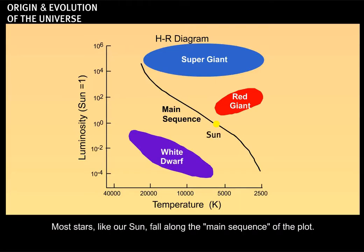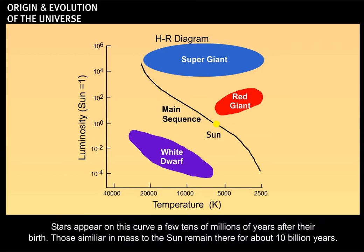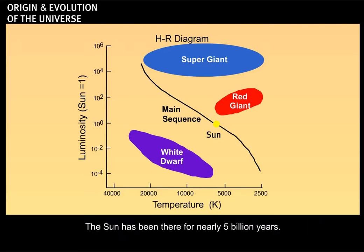Most stars, like our Sun, fall along the main sequence of the plot. Stars appear on this curve a few tens of millions of years after their birth. Those similar in mass to the Sun remain there for about 10 billion years. The Sun has been there for nearly 5 billion years.